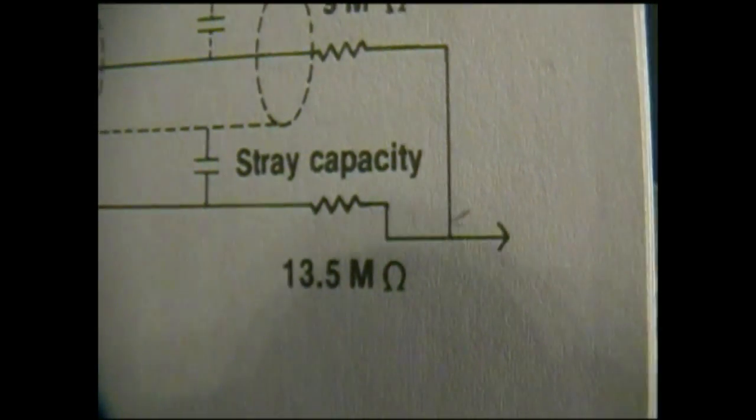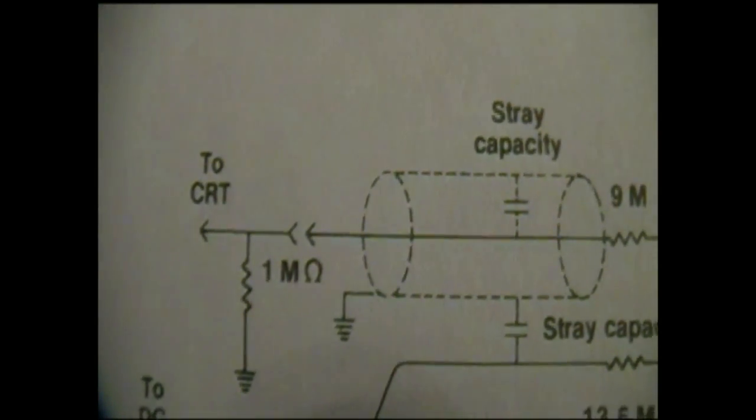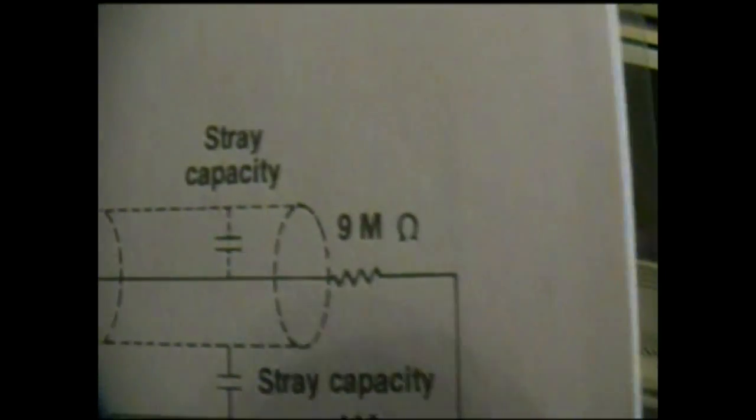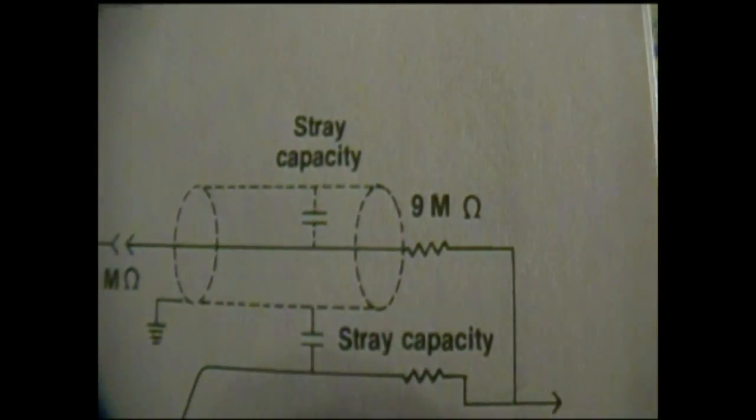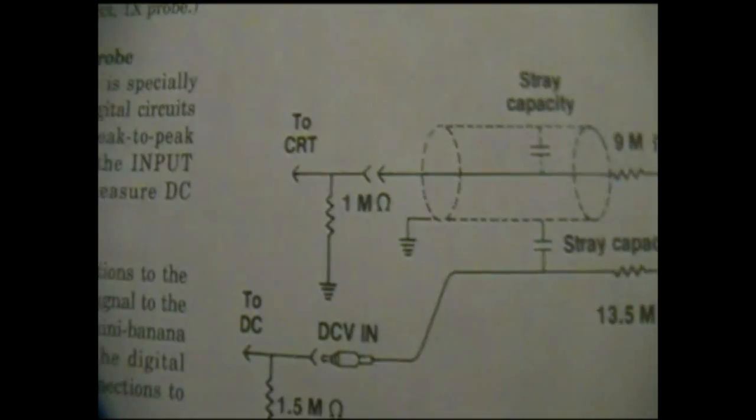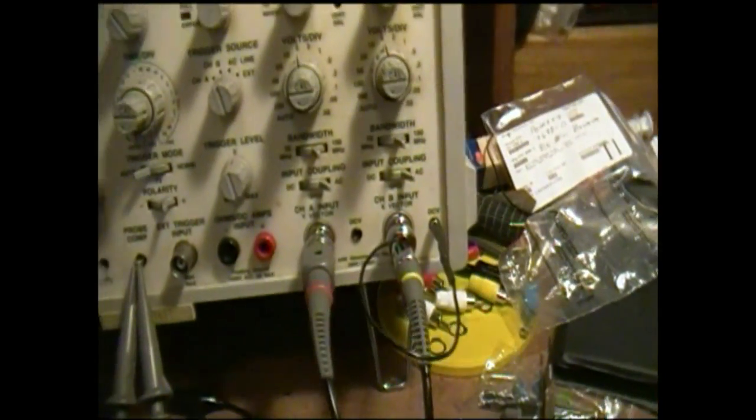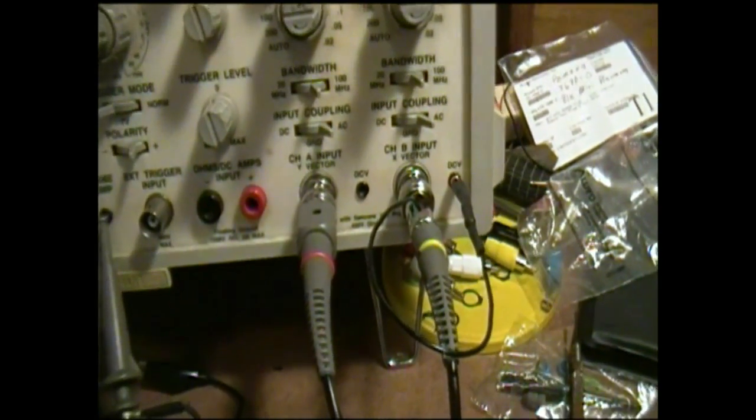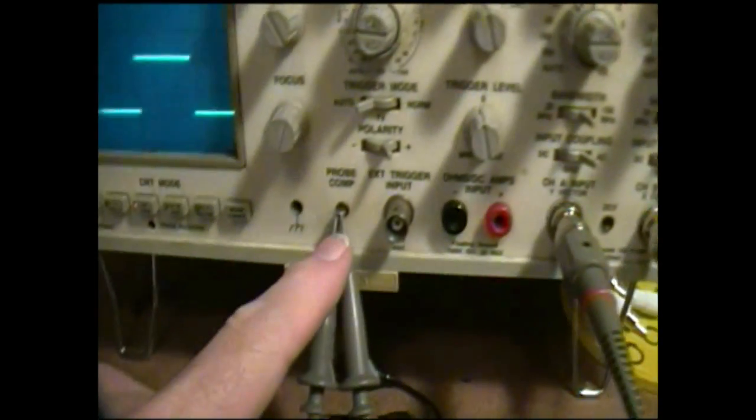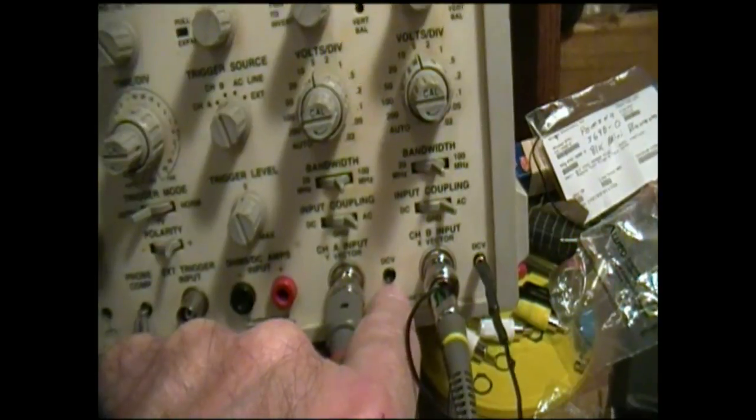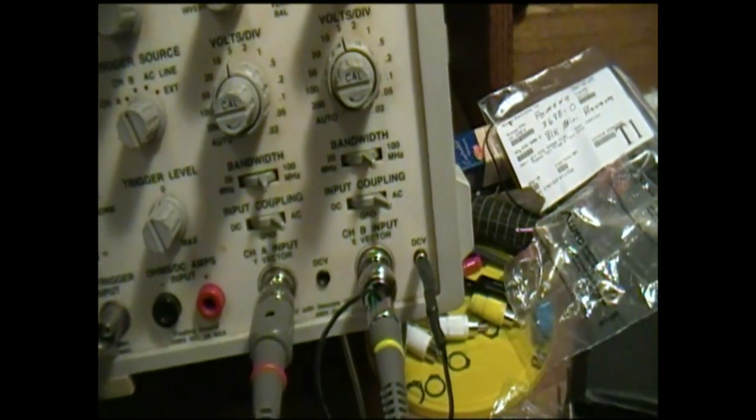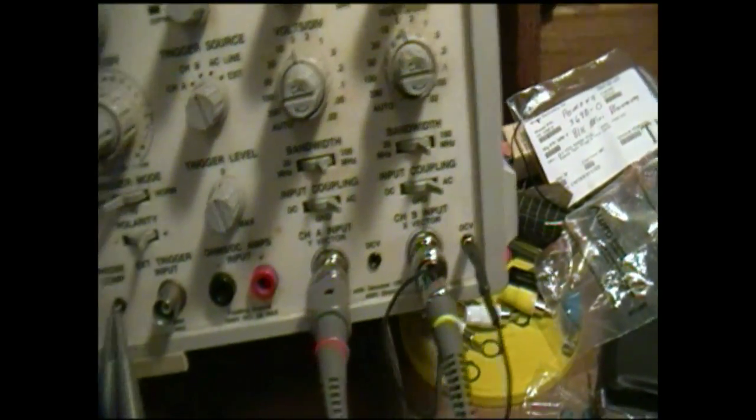The probe has a 13.5 megaohm resistor in it, and then it connects to the same point as the tip of the waveform probe or the by-10 probe. Notice the by-10 probe has a 9 meg resistance and a 1 meg input impedance, and that's fairly normal. The question is how do you get a signal from there - from the tip of this - into the DC volts input? Of course you need to insert a 13.5 meg resistor.